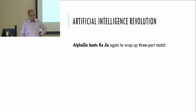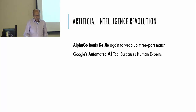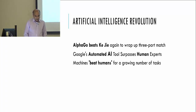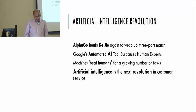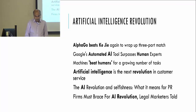In the popular media, you will hear lots of news items like: AlphaGo beats KG again to wrap up the three-part match; Google's automated AI tool surpasses human experts; machines beat humans for a growing number of tasks; AI is the next revolution in customer service.